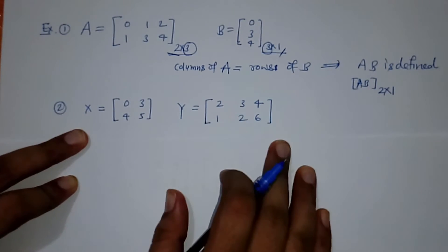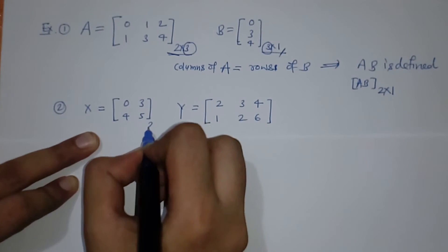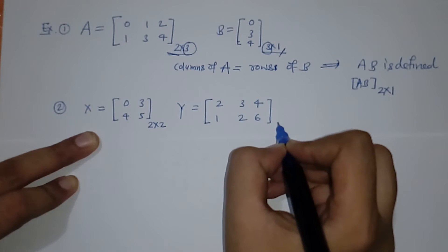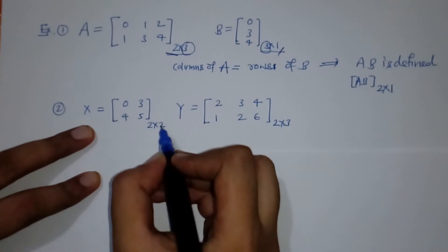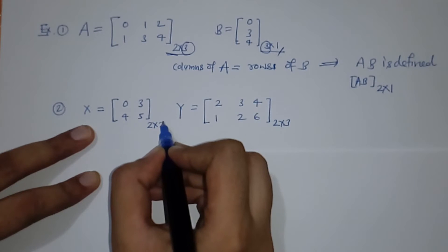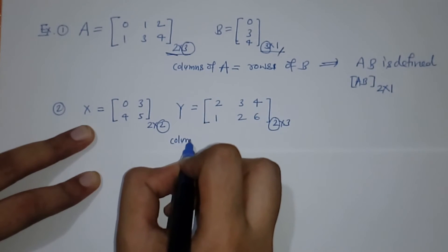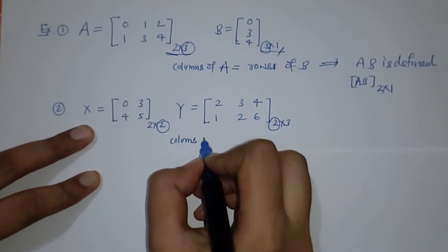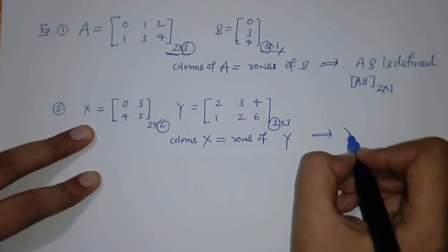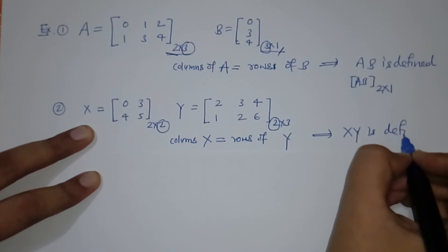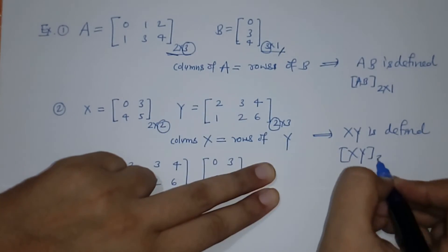Next we have matrices X and Y. We have to check whether XY is possible or not. X is of order 2 by 2 and Y is of order 2 by 3. We check the number of columns of X and the number of rows of Y — columns of X equals rows of Y. So XY is defined, and the order of XY is the remaining dimensions: 2 by 3.